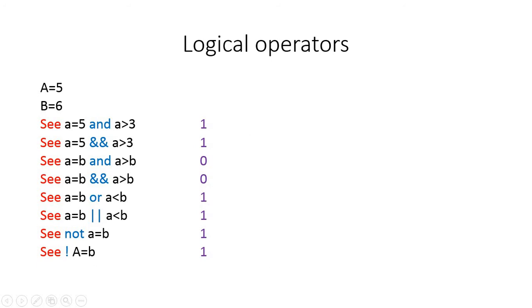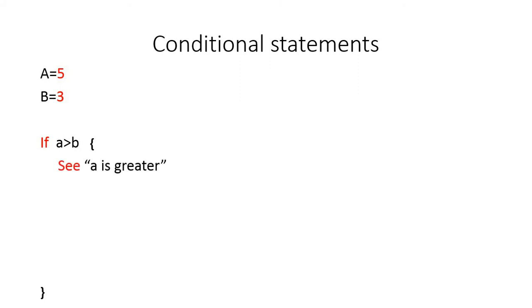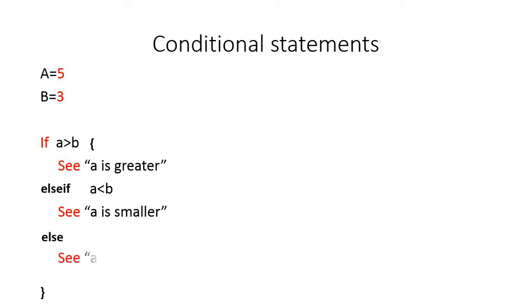Now for conditional statements. With 'a=5' and 'b=3', type 'if a > b { c "a is greater" } elseif a < b { c "a is smaller" } else { c "a is equal to b" }'. Parentheses around the condition are optional. Ring is very flexible — you can use curly braces or the 'end' command, and you can omit elseif or else blocks as needed.